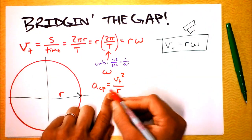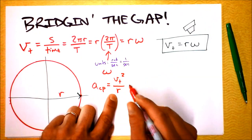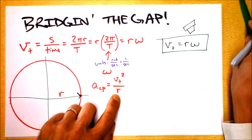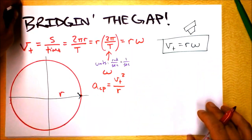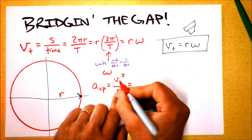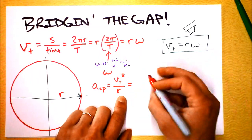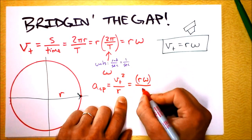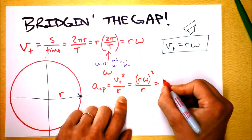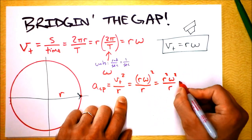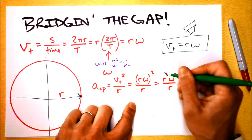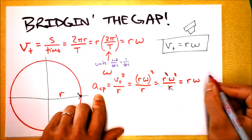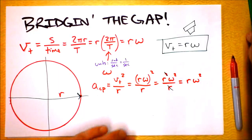I have a video explaining on geometric grounds why that equation makes sense. Now I'll substitute v_T = rω into a_CP = v_T²/r. Plugging in: (rω)² / r = r²ω² / r, the r's cancel, and we get centripetal acceleration equals r times ω².